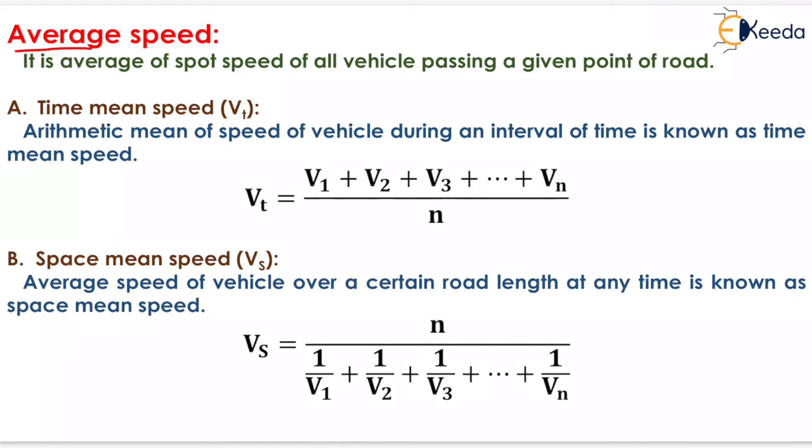The next topic is average speed. Spot speed is the speed of a particular vehicle at an instant of time. But if we want to define the average speed, then it is the average of spot speed of all vehicles passing a given point of road. If we take a particular section of a road, then the spot speed of all the vehicles passing from that cross section will be counted and the average of that spot speed is known as average speed.